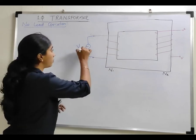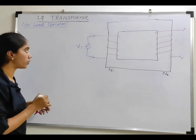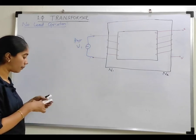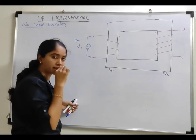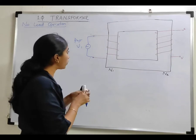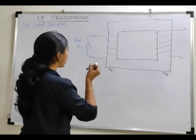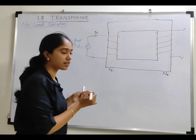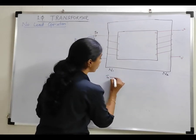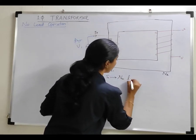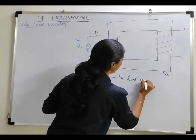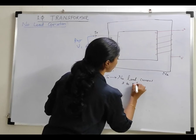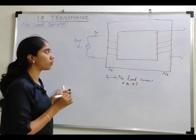When you connect a supply voltage of magnitude V1, continuously varying with respect to time, even though there is no load connected, it will draw some amount of current. A small current will be drawn by the transformer — I will mark this as I0, where I0 is the no-load current. It is around 3 to 5 percent of the rated current, so it is a very small value.